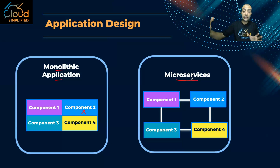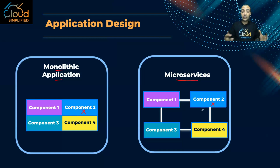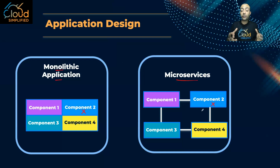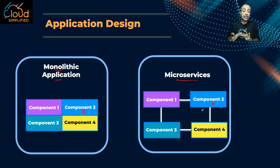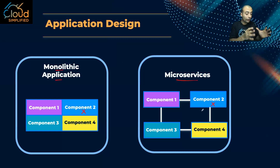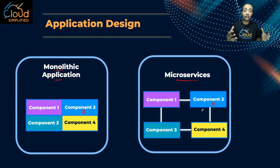By breaking it into smaller components or micro services, if one component fails the other components are still working fine — the application doesn't fail. Also, every component is independent, so you can program each in a different language, have a separate team for each, and if you want to scale component number one, you can scale only that part without scaling the others.